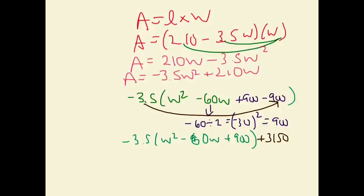So finishing this question off, I have negative 3.5. Now I'm going to factor. So the square root of W squared is W. Half of negative 60 is negative 30 squared. And then plus 3,150.